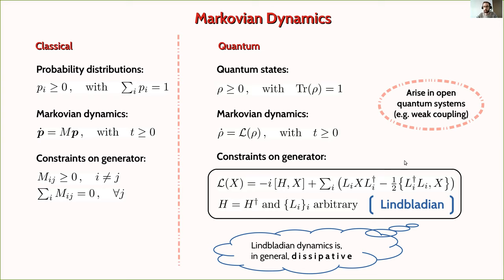You might ask why you would care for this type of dynamics, since fundamentally quantum mechanics is described by the Schrödinger equation. The best answer is that this type of dynamics is ubiquitous in open quantum systems. For instance, it is known to arise when one has a weak coupling of the system with its surroundings, the environment.